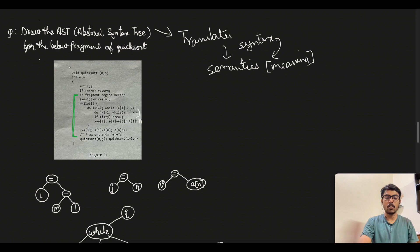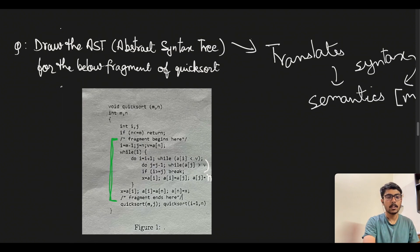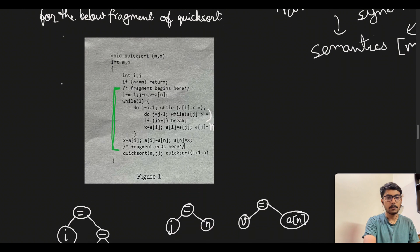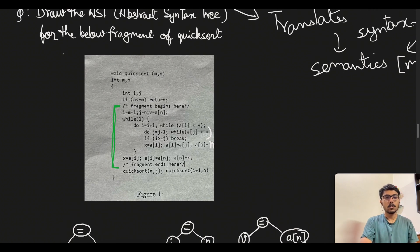For representing that logic, we use abstract syntax tree. In this we have been given this particular piece of code. Let me zoom in a bit. We are given the function of quicksort.